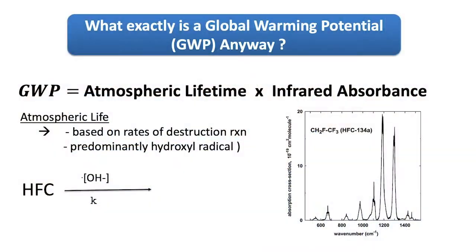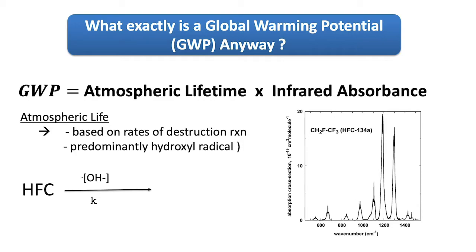The atmospheric lifetime is based on the atmospheric destruction reaction mechanisms. For most refrigerants, the major atmospheric destruction mechanism is reaction with hydroxyl radicals — a reactive species found in the atmosphere. What the hydroxyl radical likes to do is react with hydrogen in a molecule. If you have hydrogen in your refrigerant, hydroxyls can remove the molecule from the atmosphere pretty quickly, giving you shorter atmospheric lifetimes.